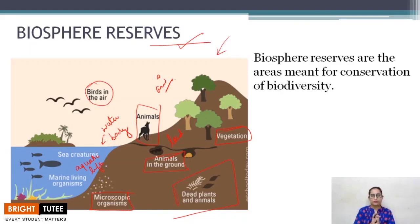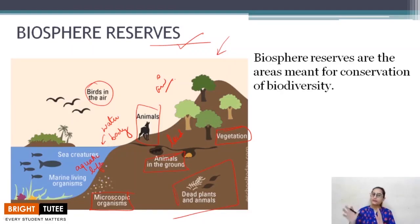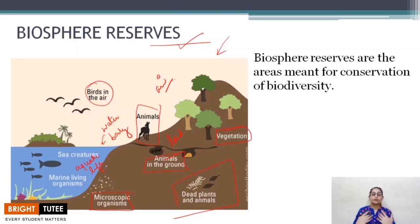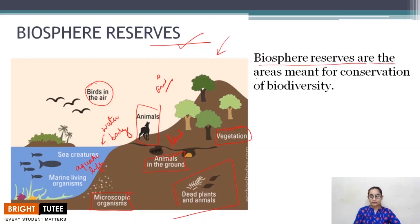Basically, this is a small part of earth — a small part of land — which is separated and kept naturally. No human development takes place in this area; it is left as it is. The creatures present handle themselves — how they live, eat, and reproduce. There is no human involvement at all. Biosphere reserves are areas meant for the conservation of biodiversity.